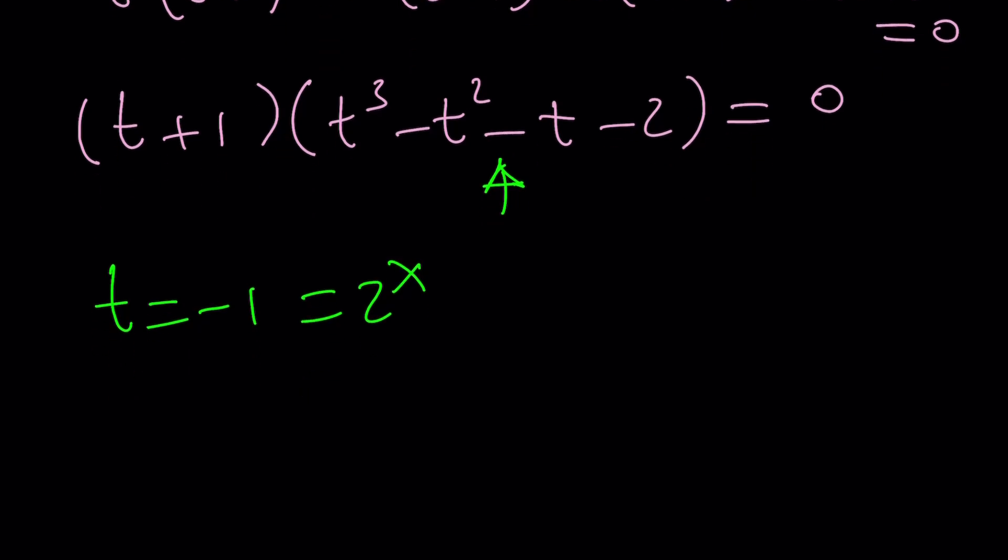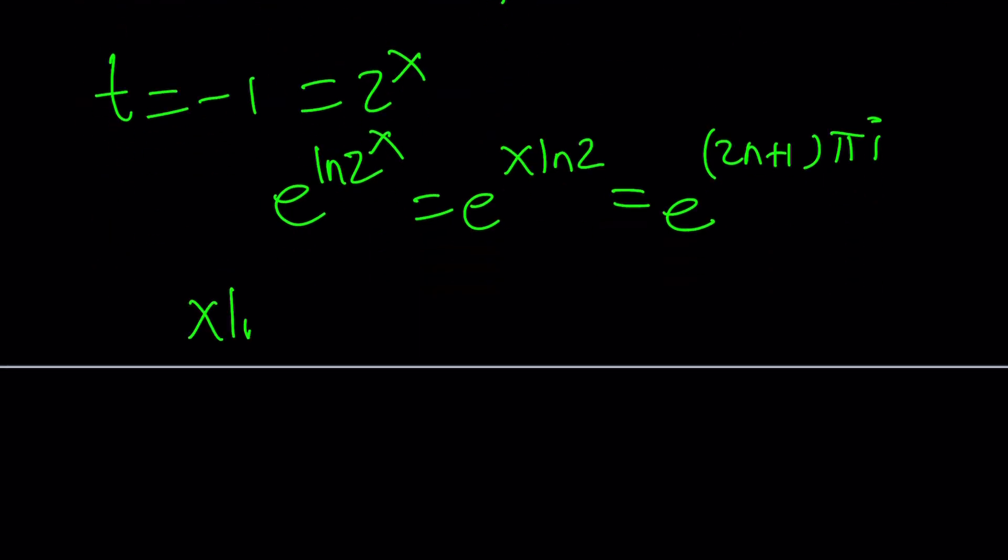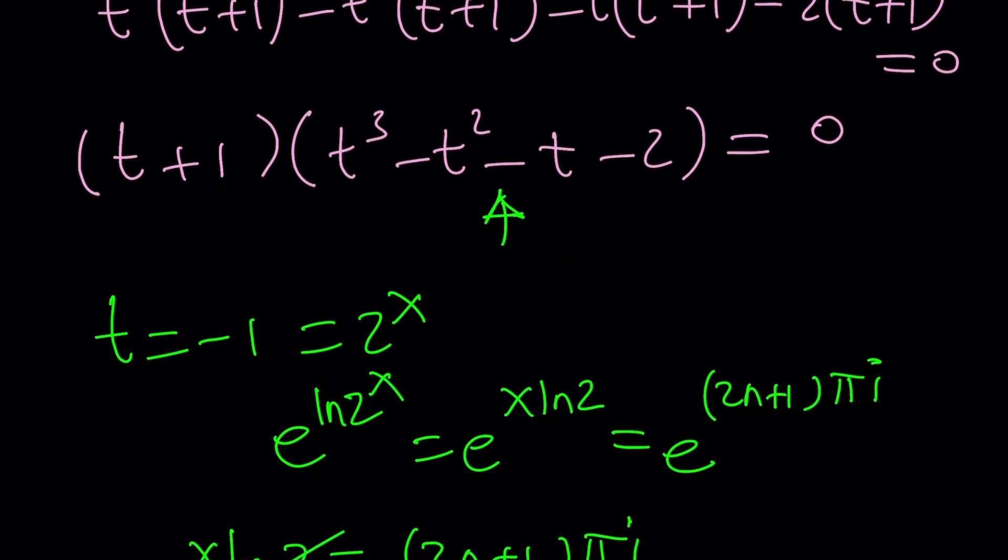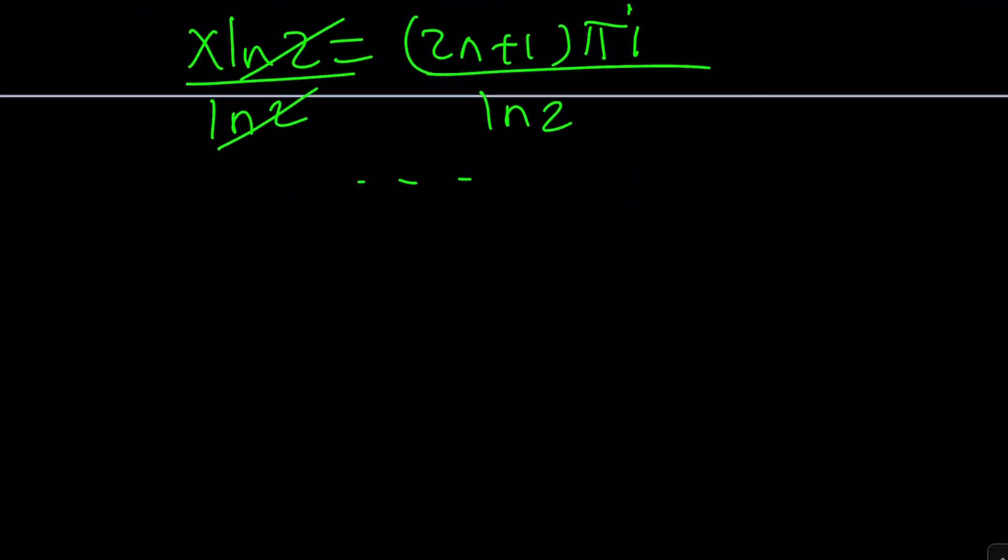ln 2 to the power x does that make sense? and that's gonna be e to the power x ln 2 and negative 1 can be written as e to the power 2n plus 1 times pi i in polar form from here you can set the exponents equal x ln 2 is equal to 2n plus 1 n is an integer by the way pi i divide both sides by ln 2 and you'll get the x values and they are complex n equals 0 n equals 1 whatever negative values work as well so on and so forth right? so there must be another solution and you can still try negative 1 and other possibilities or you can use the cubic formula but with the first method it's just gonna be a little painful let's go ahead and take a look at the second method which is gonna give us the answers in a nicer way